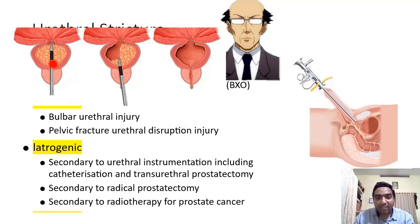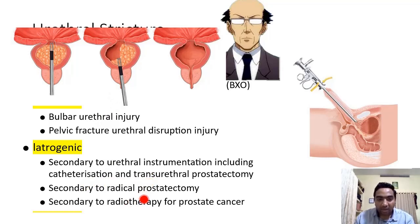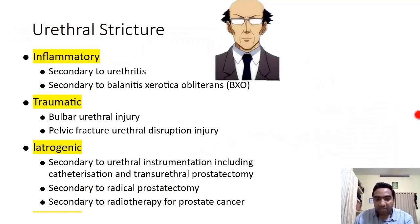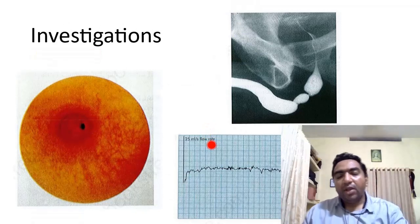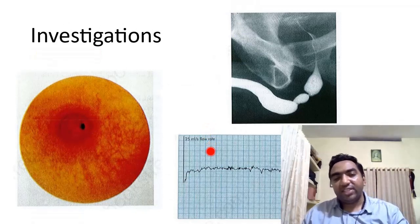Transurethral resection of the prostate (TURP) for benign prostatic hyperplasia can cause urethral stricture later on. Radical prostatectomy and radiotherapy for prostate cancer are also iatrogenic causes of urethral stricture. There are also idiopathic causes of urethral stricture.